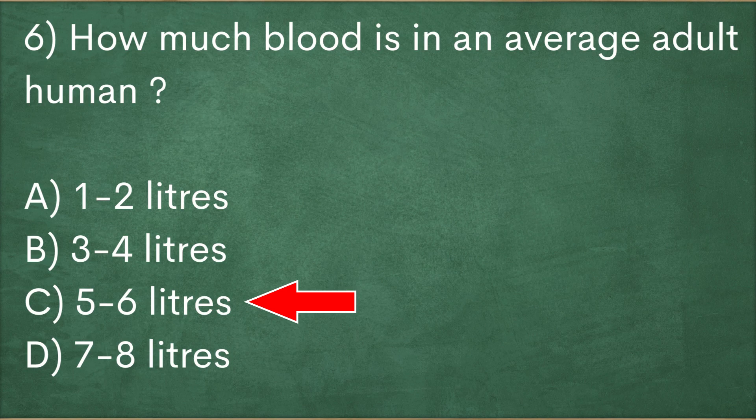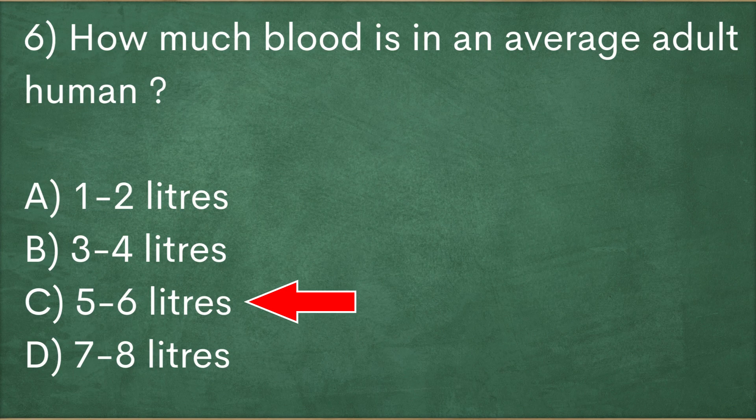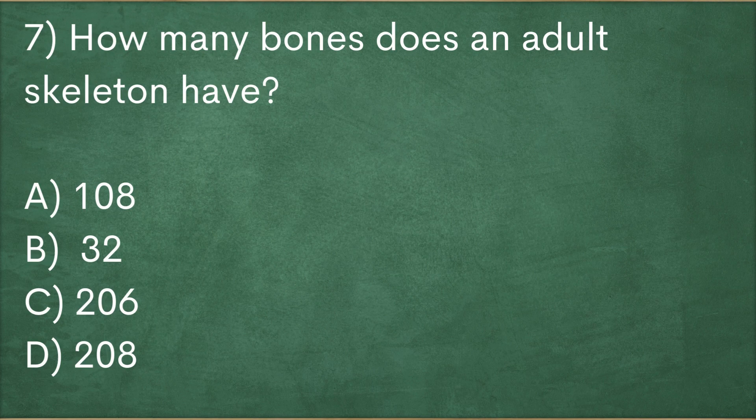The amount of blood circulating within an individual depends on their size and weight. But the average human adult has nearly 5 liters of circulating blood.